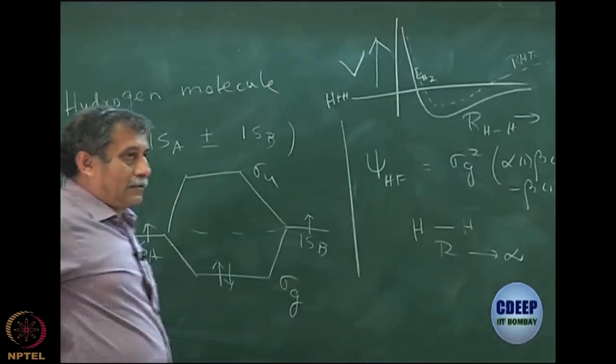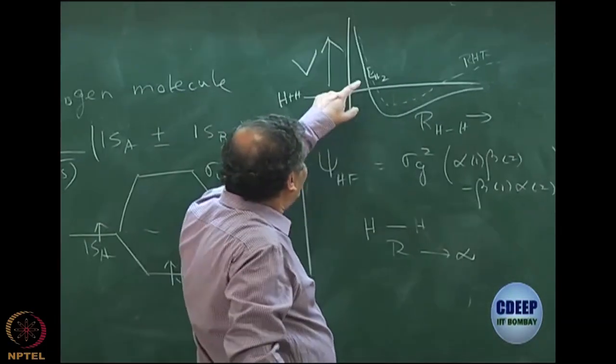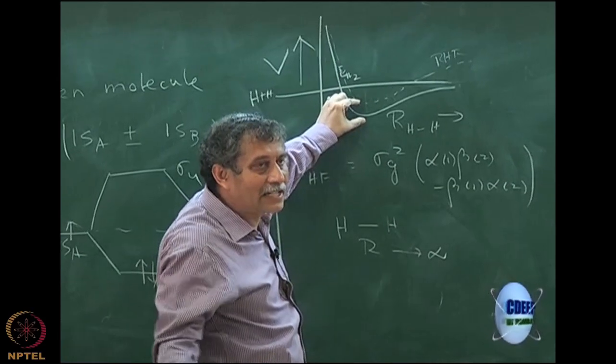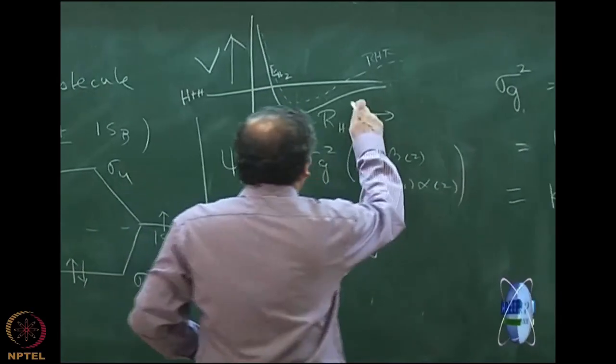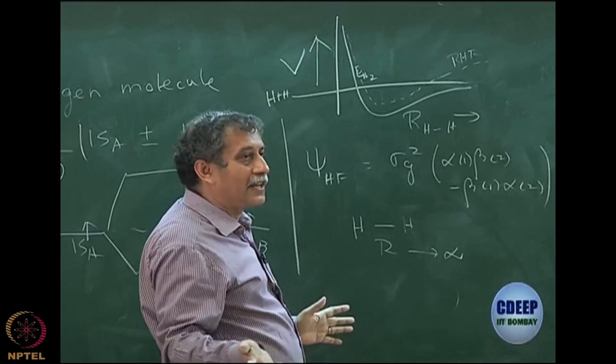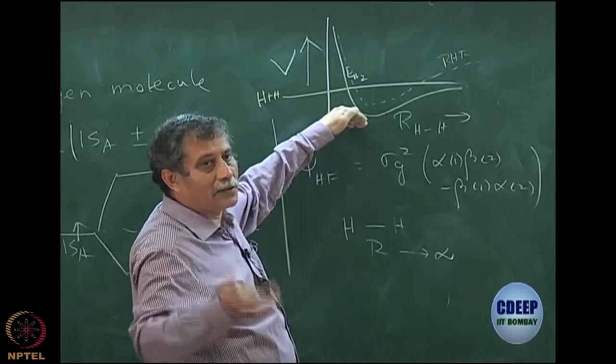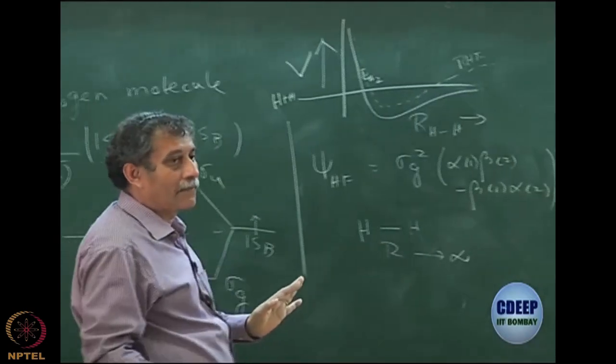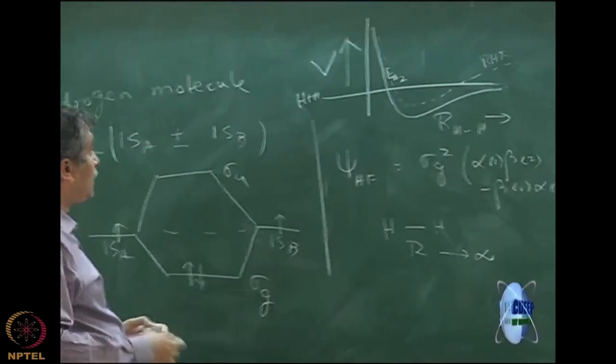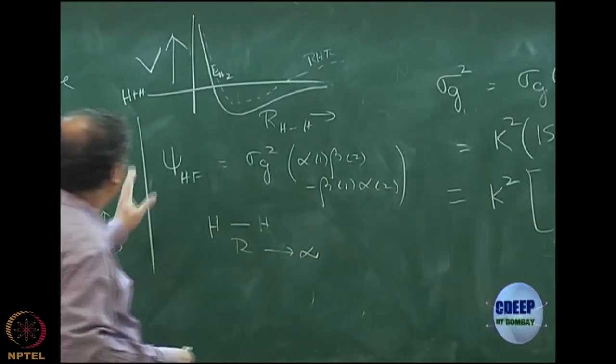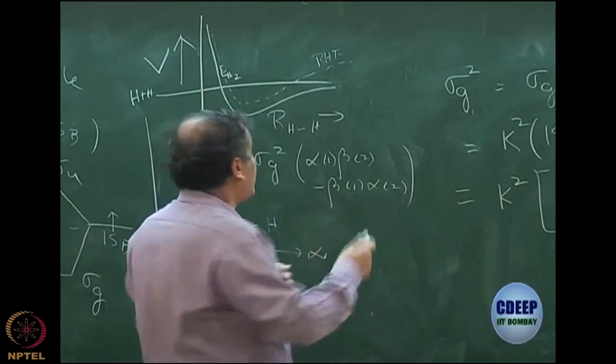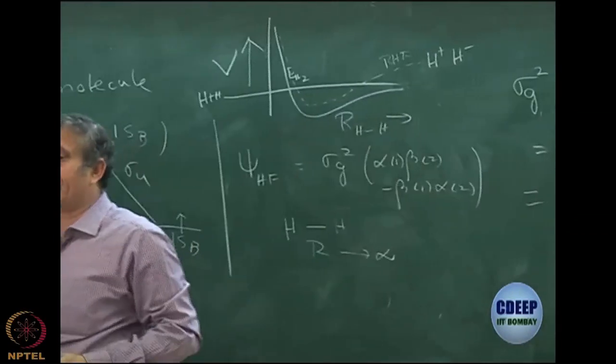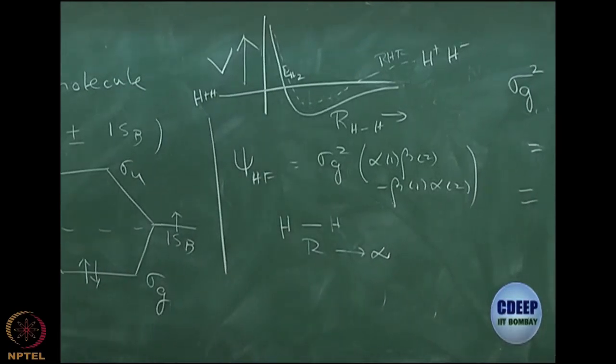It will actually overstep. Of course, at the equilibrium geometry, it is not bad except that it will not be exactly equal to exact. That is something that you expect because this is an approximation and by variation theorem, you expect that this should be higher than this. But what is important is that qualitatively, it does not approach this. That is a serious problem because then it actually predicts a wrong separation. In fact, what it approaches is quite close to H plus H minus. If you do an excited state, both of them converge to the same number at large distance.